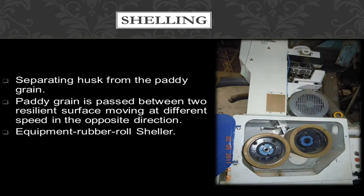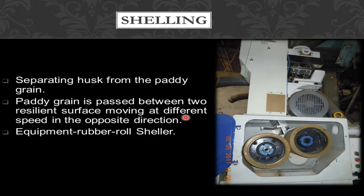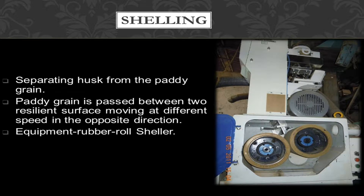Next is shelling — separating husk from the paddy grain. The paddy grain is passed between two resilient surfaces moving at different speeds in opposite directions. The equipment used is called a rubber roller sheller. This is how it looks like.